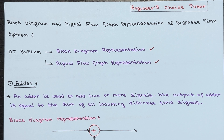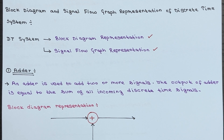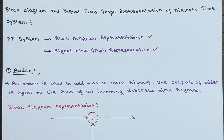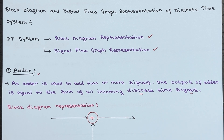These elements are used to construct the diagram and showcase the relationship between different signals. Let's talk about the adder first. This handy tool allows us to add two or more signals together. The output of the adder is simply the sum of all the incoming discrete time signals.